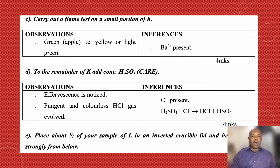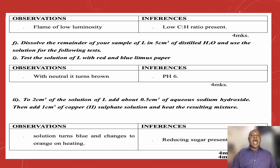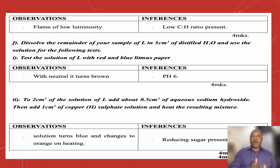Test E: place about one-quarter of your sample of L in an inverted crucible, light it, and heat strongly from below. My observation was that it burns with a flame of low luminosity. That shows that the hydrocarbons present are of a lower ratio — aliphatic compounds with around four, five, or six carbons.